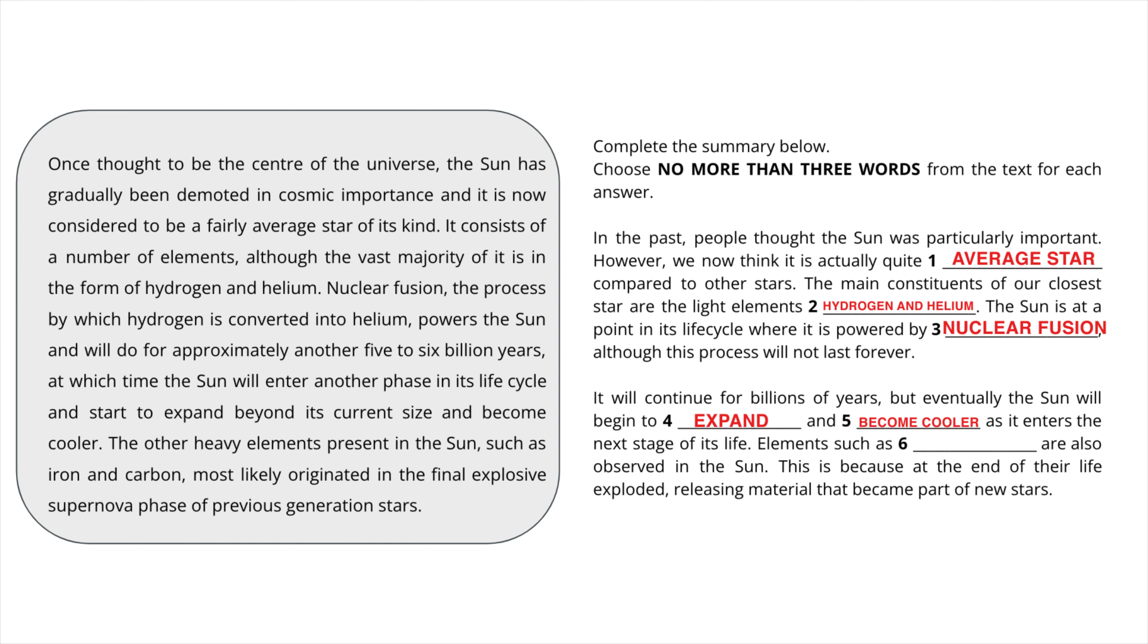The last answer, sixth one, is iron and carbon, which is what are the other elements that can be observed in the sun and they are the other elements present in the sun such as iron and carbon and hence this is the answer for the sixth one. We have got all the answers now, see it was very easy.